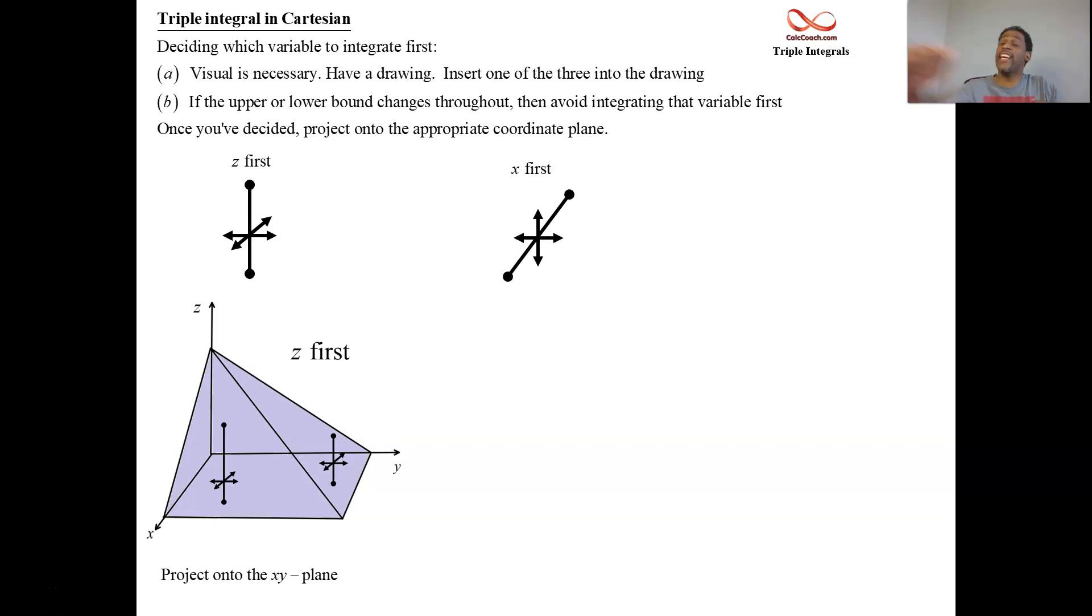If you do x first, you slice with a rectangle, small, thin rectangle parallel to the x axis. And then you move that in y, and you move that in z. It'll look like this.